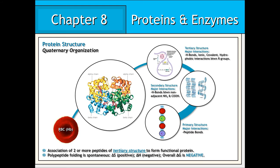Some proteins, such as hemoglobin — the iron-containing oxygen-binding protein found in red blood cells — achieve an even higher level of organization known as quaternary structure. This level involves the association of two or more polypeptide chains that have achieved tertiary structure associating with one another to form a metabolically active complex. The hemoglobin protein is composed of four polypeptide chains of tertiary structure held together by hydrogen bonding, covalent, and ionic interactions.